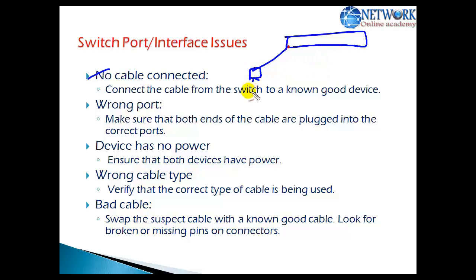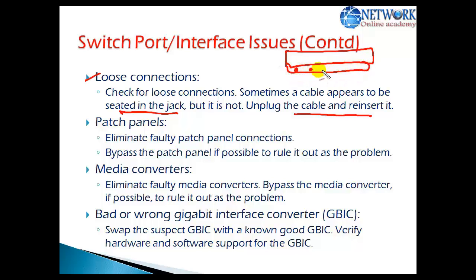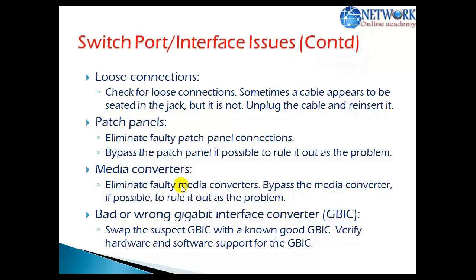There might also be a problem with your physical LAN card, which is rare but worth keeping in mind. To summarize the physical connectivity checklist: no cable connection, wrong cable type, device having no power, connecting on a wrong port, bad or faulty cable, and loose connections — make sure the cable jack is properly seated on both sides; sometimes unplugging and reinserting fixes the problem. In production networks with patch panels, a faulty patch panel could be the issue — try connecting directly to the switch port to verify. Also, wrong interface converters used in between can affect connectivity.